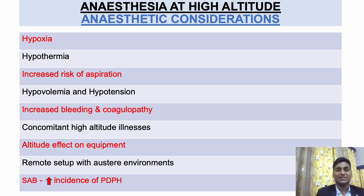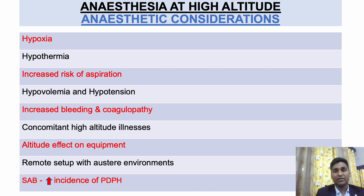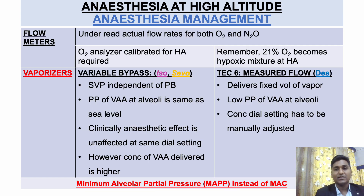Coming to the important part — anesthetic considerations. Patients under anesthesia at higher altitude are more susceptible to hypoxia, hypothermia, and hypovolemia. There is increased risk of bleeding and coagulopathy. Patients who recently ascended may present with acute emergencies while harboring high altitude illnesses as they are not acclimatized. Altitude affects equipment, which will be discussed subsequently. Also, as these setups are in very remote locations, help could be 100 miles away, so you must be prepared. Incidence of PDPH also increases at higher altitudes.